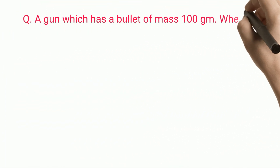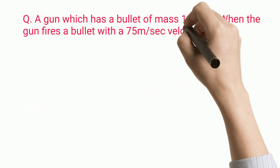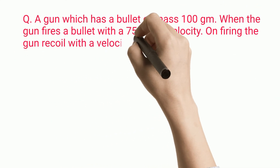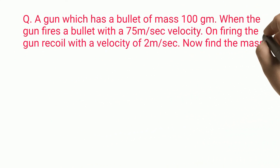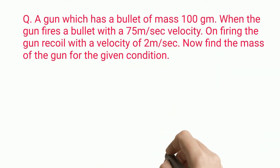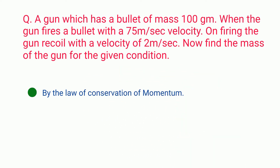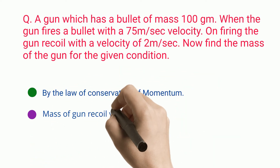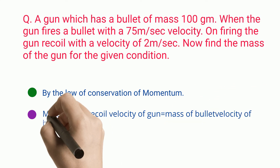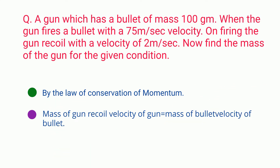Problem: A gun has a bullet of mass 100 g. When the gun fires the bullet with a velocity of 75 m/s, the gun recoils with a velocity of 2 m/s. Find the mass of the gun. By the law of conservation of momentum: mass of gun × recoil velocity of gun equals mass of bullet × velocity of bullet.